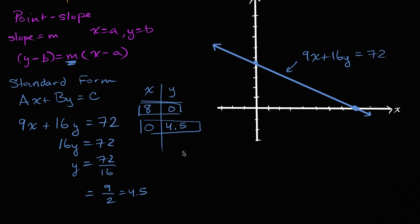You could use the x and y-intercept as two points and figure out the slope from there. So when you go from 8 to 0, your change in x is equal to negative 8. And to go from 0 to 4.5, your change in y is going to be 4.5. So your slope is change in y, 4.5, over change in x over negative 8. And multiply the numerator and denominator by 2, you get negative 9 over 16.